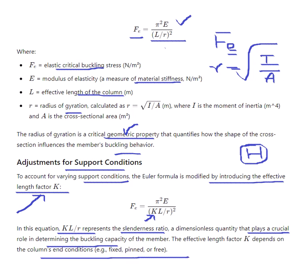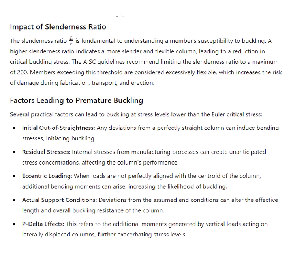The impact of slenderness ratio KL/R is fundamental to understanding a member's susceptibility to buckling. A high slenderness ratio indicates that the member is more slender and flexible, leading to a reduction in critical buckling stress. If the slenderness ratio is high, that column is more slender and flexible, thereby reducing its critical buckling stress.